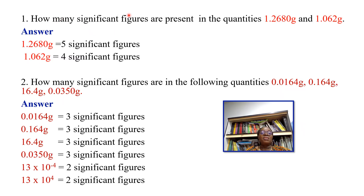How many significant figures are present in these quantities? For 1.2680 grams, all values including the trailing zero after the decimal are significant — it has 5 significant figures. For 1.062 grams, all digits are significant — it has 4 significant figures.